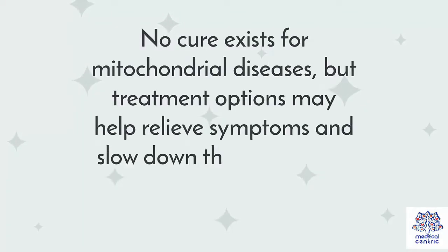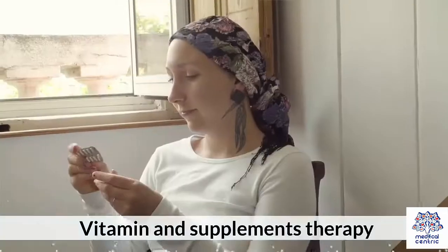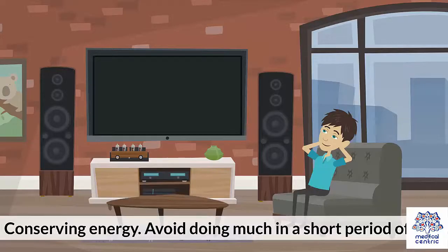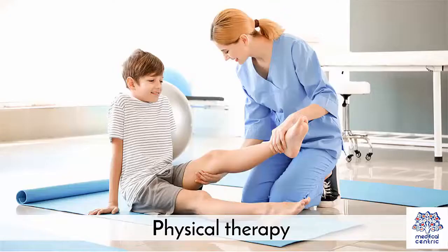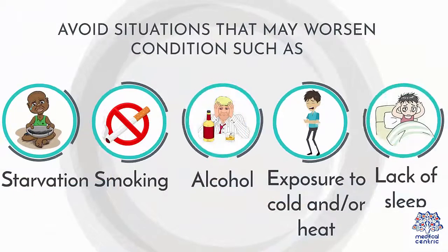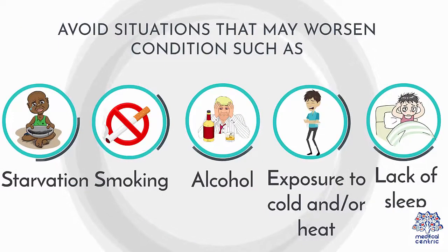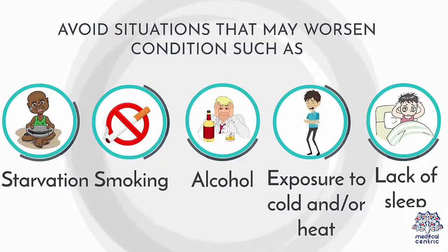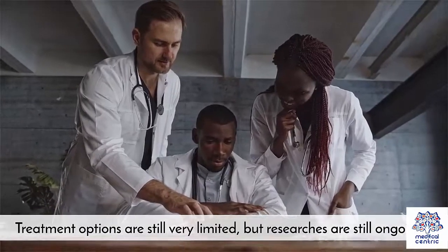No cure exists for mitochondrial diseases, but treatment options may help relieve symptoms and slow down the progression of the condition. Treatment options may include vitamin and supplement therapy, conserving energy, avoiding doing too much in a short period of time, eating healthy and maintaining hydration, physical therapy, and avoiding situations that may worsen the condition, such as starvation, smoking, alcohol, exposure to cold and/or heat, and lack of sleep. Treatment options are still very limited, but research is still ongoing.